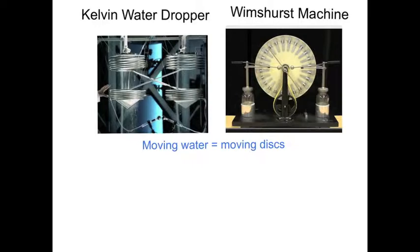The Wimshurst machine has got some notable similarities to the Kelvin water dropper. First of all, the moving water is a little bit like the moving discs of the Wimshurst machine. So the water comes down and is circulated back up again.